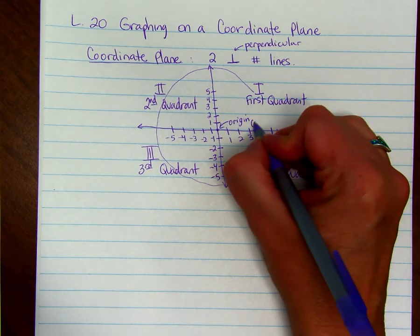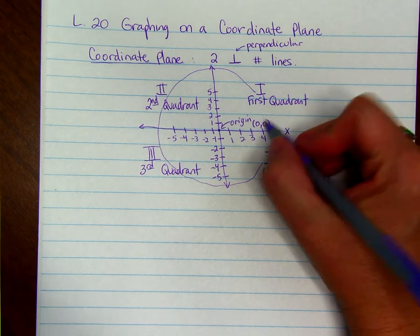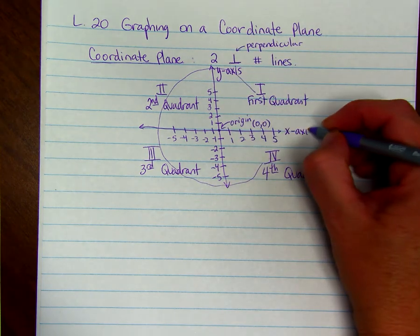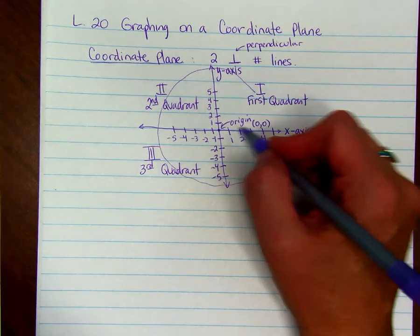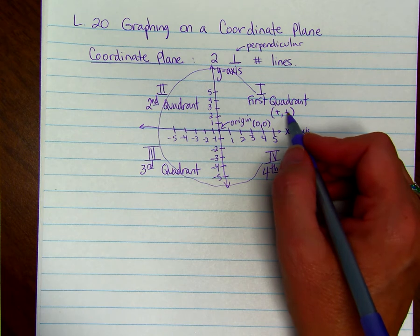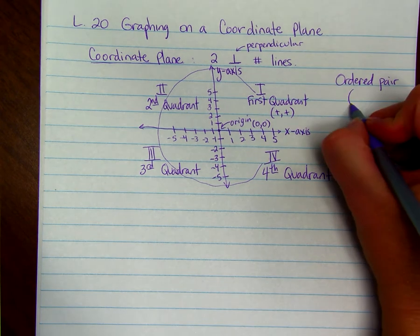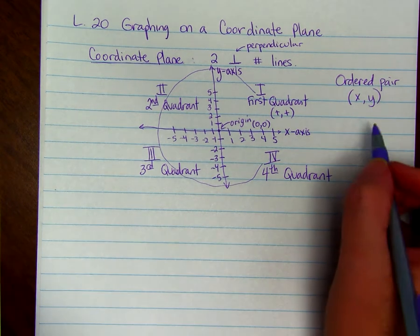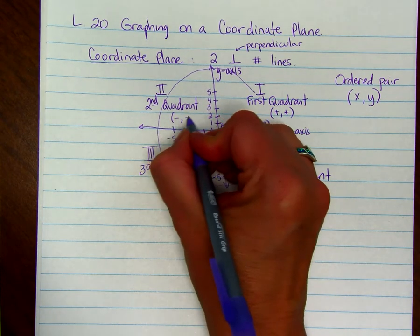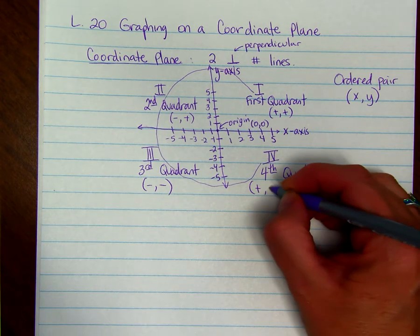So the origin is listed as a point zero, zero. The first number is from the x-axis or the horizontal axis. The second number you see is from the y-axis, and it's the vertical number line. So in the first quadrant all of the x-values are positive and all of the y-values are positive. An ordered pair represents a point on the graph where x comes first and then y comes second. In the second quadrant, x-values are negative and y-values are positive. In the third quadrant they're both negative, and in the fourth quadrant x is positive and y is negative.